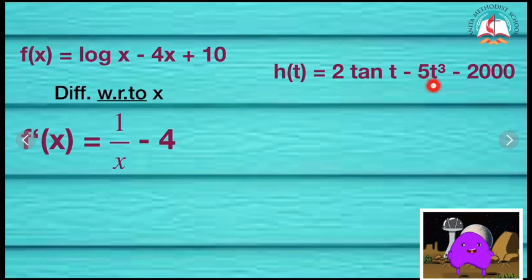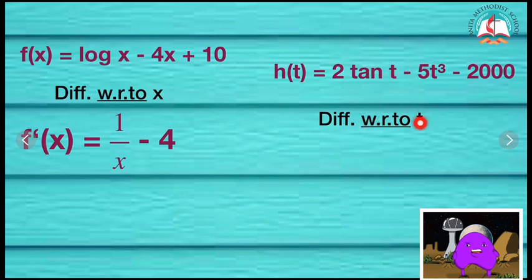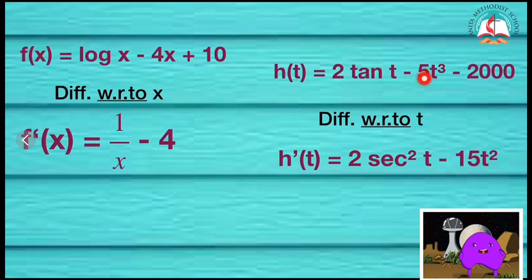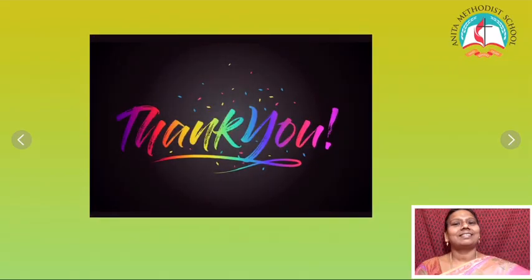h of t is equal to 2 tan t minus 5t cube minus 2000. Because the right side variable is t, I have to differentiate with respect to t. So h dash of t: tan t's differentiation is secant square t, therefore 2 secant square t. Then minus 5 times 3 is 15, and I have to reduce the power by 1, so it becomes t square. And 2000 is a constant — constant's differentiation is 0.